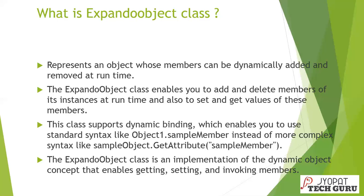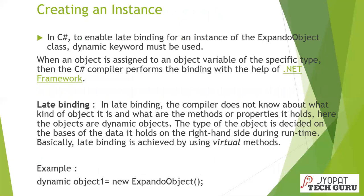Once the object is created, you can store any type of information. The ExpandoObject class is an implementation of the dynamic object concept that enables getting, setting, and invoking members. To enable late binding for an instance of the ExpandoObject class in C#, the dynamic keyword must be used — you may have used the dynamic keyword to create instances for many classes.